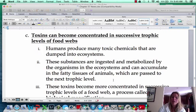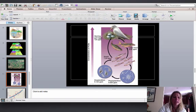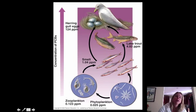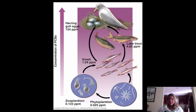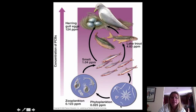Another scary thing that's happening is bioaccumulation of toxins, which can cause biomagnification. Let's say there's a lake and a factory nearby, and mercury is getting into that lake. Your primary producers, at the bottom of the food chain, are going to take up some of that mercury — about 0.025 parts per million accumulating in their tissues. It's not really high at that level.